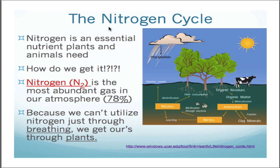So, the nitrogen cycle — kind of the second cycle we've been talking about after the water cycle. The first thing I want you to understand is that nitrogen in the nitrogen cycle is extremely important. Nitrogen is essential for anything that's living — plants, animals — we all need nitrogen. Now, the question is: why in the world do we need that nitrogen?